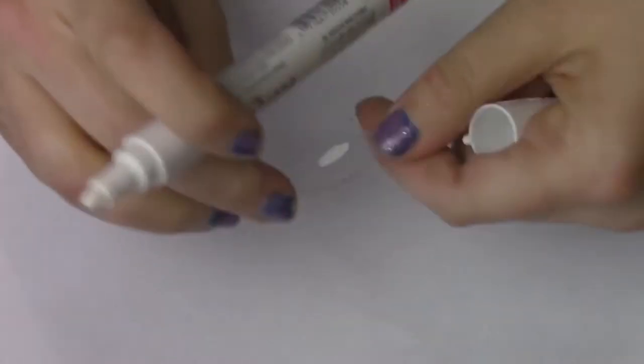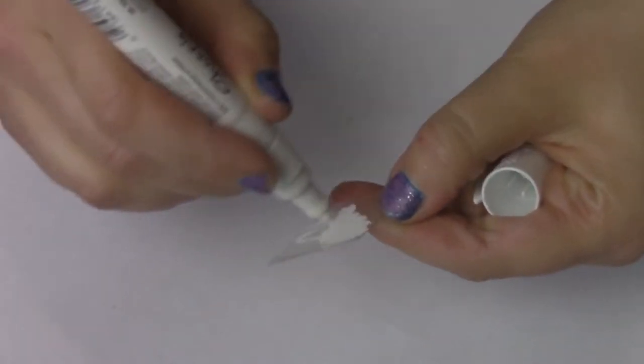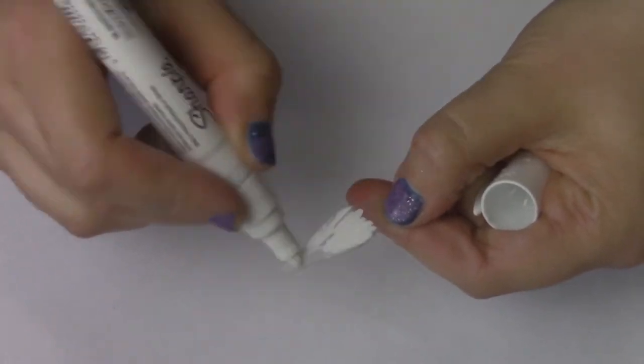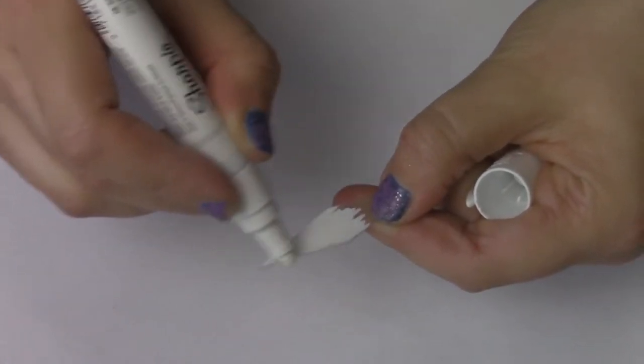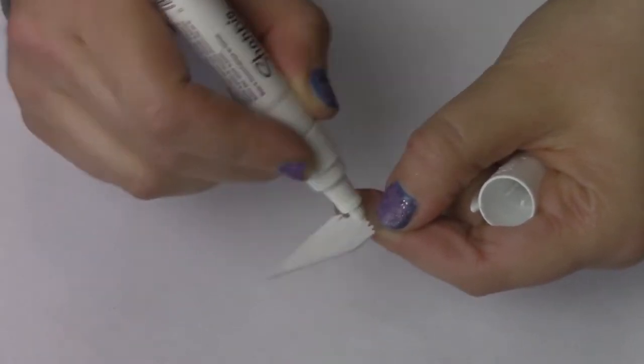Once it's dry, go ahead and use paint or a Sharpie paint pen, which I find much easier to use, and paint the entire piece, front, back, and sides in white. You may have to do two layers.